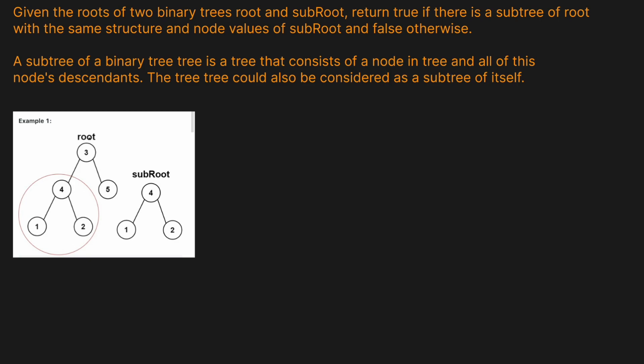Given the roots of two binary trees, root and sub_root, return true if there is a subtree of root with the same structure and node values as sub_root, and false otherwise. A subtree of a binary tree consists of a node in the tree and all of its descendants. The tree could also be considered a subtree of itself.